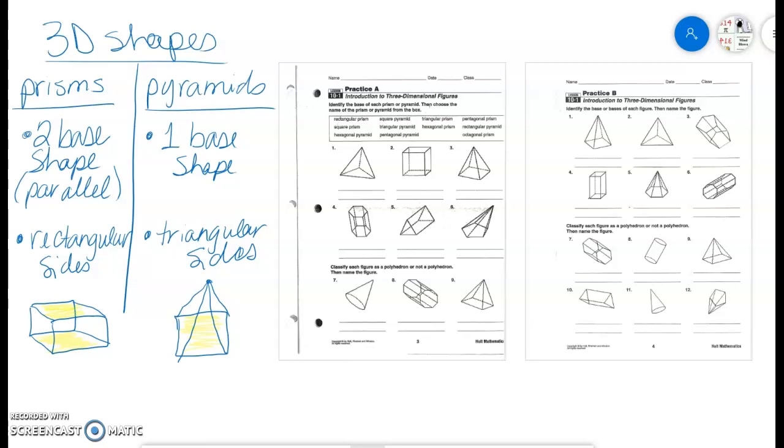Now you'll notice on both of these, I took my yellow highlighter and I shaded in my base. It is really important that you identify your base shape, because the shapes are named after their base. So we would call this a rectangular prism, and then we would call this one a square pyramid.